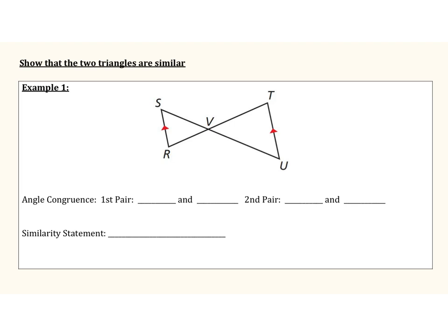In this example, we're going to show again that we have two similar triangles, where we don't have any angle mark information other than markings on our two sides — which tells us we have parallel lines. We're going to use parallel lines and transversals to identify congruent angles. In the middle, two lines intersect creating vertical angles that are congruent. With parallel lines on the sides and a transversal, alternate interior angles are congruent — giving us angle R congruent to angle T, and angle S congruent to angle U.